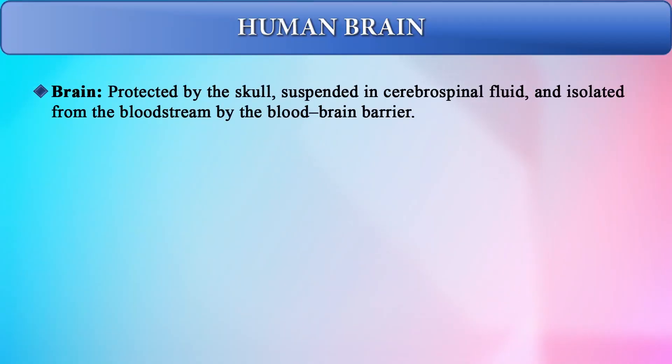The human brain, which is roughly the size of your fist, controls the entire body and all its different functions. This is why brain death and heart death are two important concepts in medicine. In some countries brain death is considered the death of a person, while in others the heart must stop. The brain is protected by the skull, suspended in cerebrospinal fluid, and isolated from the bloodstream by the blood-brain barrier.